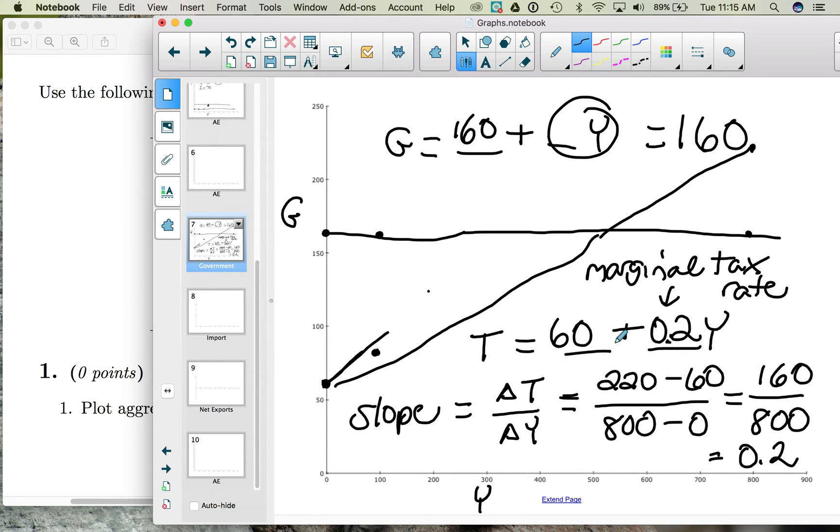So we have our formula now for net taxes and we have our formula for government spending. If we look at it on a graph, notice that at low levels of income, like at an income of 200, our government spending is more than our net taxes. If the government spends more than it brings in in tax revenue, we have a budget deficit.